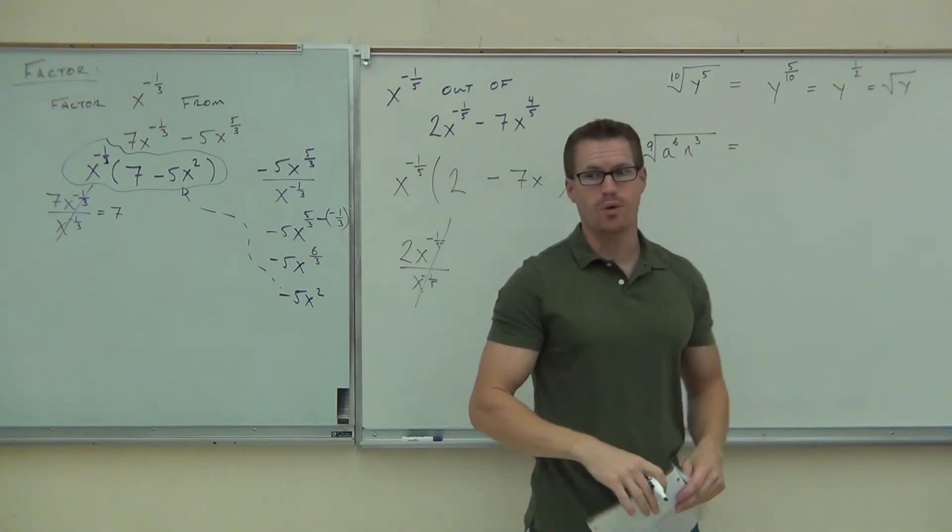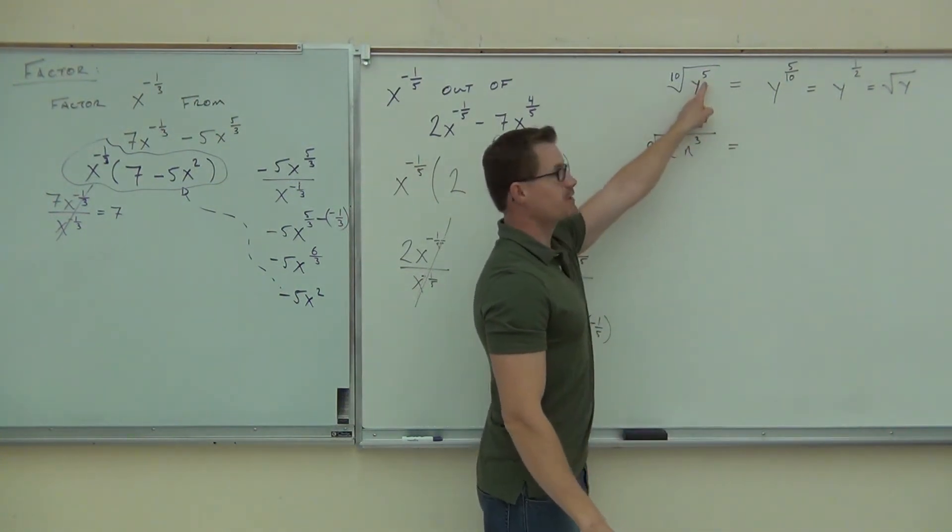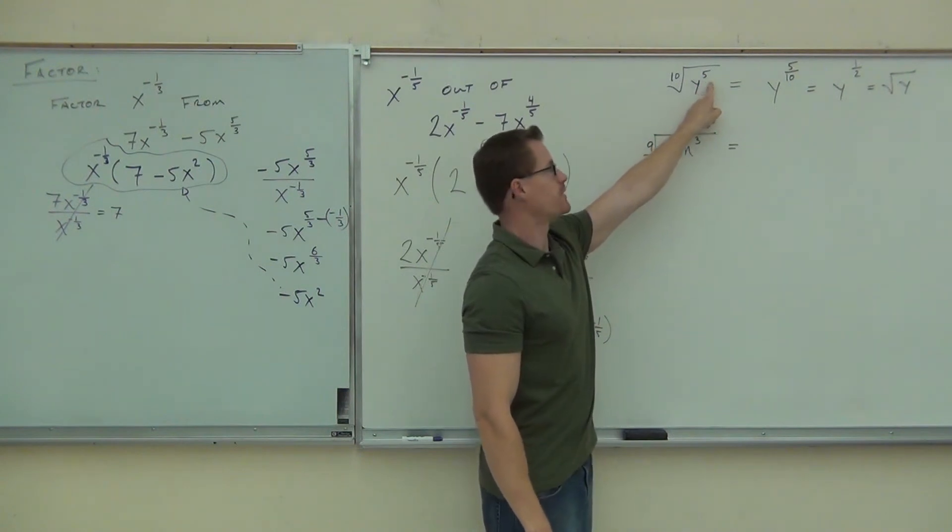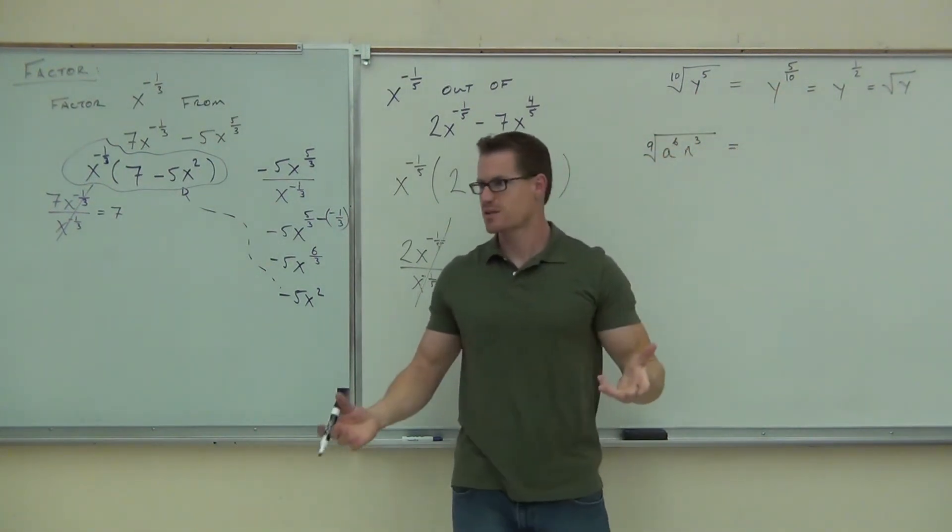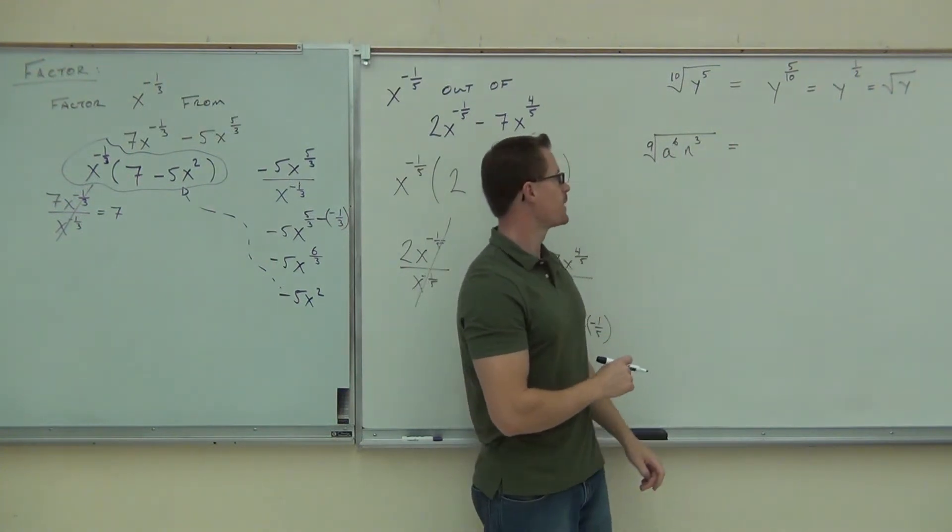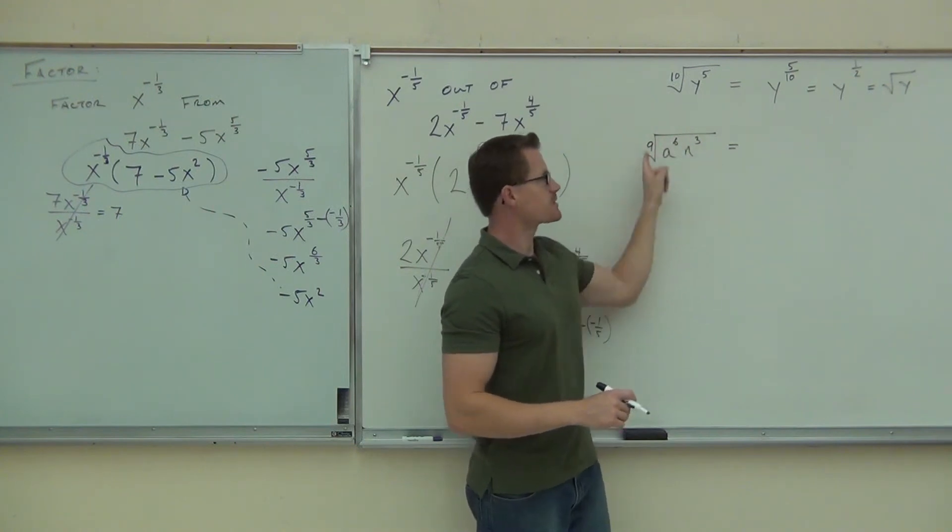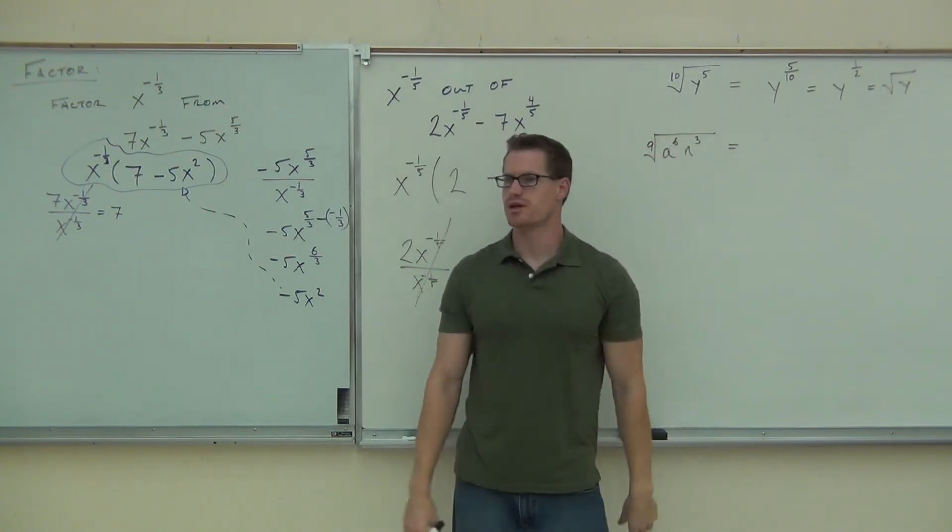Now, does this work all the time? Not all the time. If you had like seven in here, that wouldn't work. You'd have y to the seven tenths, you can't simplify that. However, if you can write it as a fraction that is simplifiable, then of course you can simplify that. Can you write this as something to a fractional exponent? Let's try it.